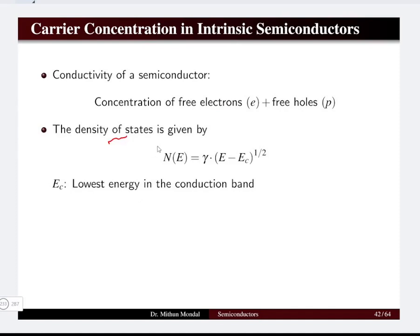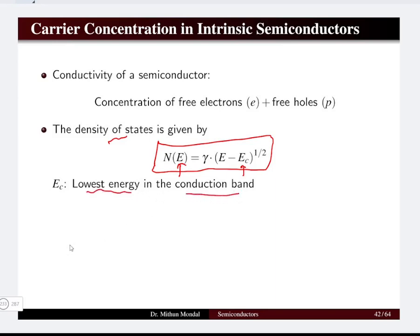The density of states present in the semiconductor is given by the equation: N(E) = γ(E − Ec)^(1/2), where E is the energy which we need to calculate and Ec denotes the lowest energy in the conduction band of the semiconductor. We will use this equation to find the concentration of states.